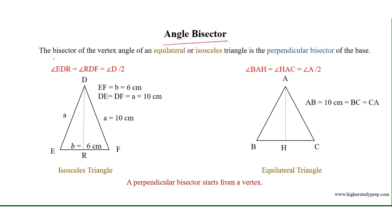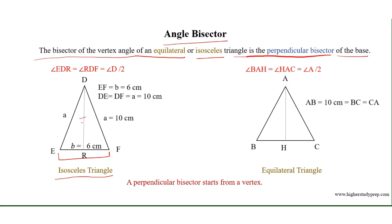The bisector of the vertex angle of an equilateral and isosceles triangle is the perpendicular bisector of the base. For this isosceles triangle, EF is the base and DR is the perpendicular bisector. DR is also the angle bisector of vertex angle D, so angle EDR equals angle RDF equals angle D divided by 2.